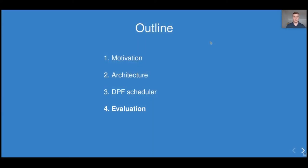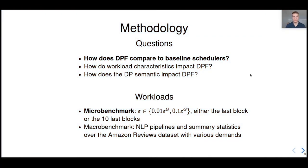Let's see how DPF works in practice. In the paper, we address three main questions, which are first, how does DPF compare to baseline schedulers, such as first-come-first-serve or round robin? Then, how do workload characteristics impact DPF, such as whether it's homogeneous or not? And finally, how does the DP semantic impact DPF? To answer these questions, we developed two workloads. The first one is a simplified experiment, with only four types of pipelines, either small epsilon or large epsilon, and one block or ten blocks. The second workload is a macro benchmark, with real data from Amazon reviews, with NLP pipelines and statistics, in order to have a wide range of demands. Today, I'm just going to focus on the first question over the micro benchmark.